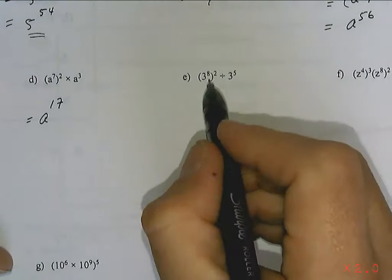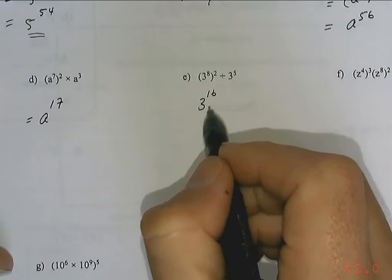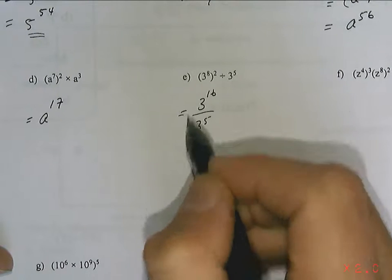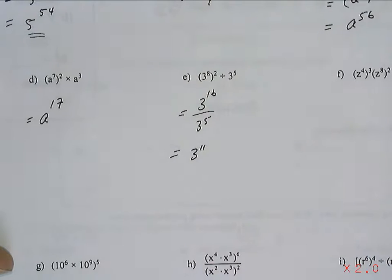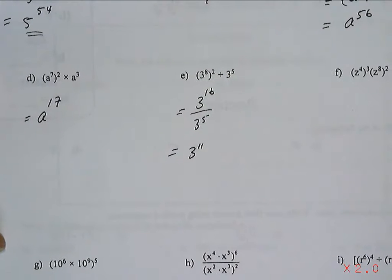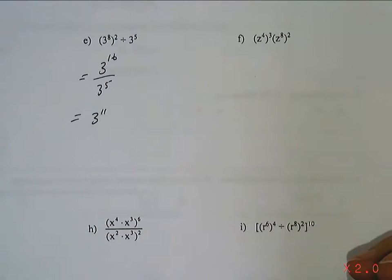Okay. So, the next one. This is going to be 3 to the 16 divided by 3 to the 5. And I'm going to come up with 3 to the 11 as my answer. The next one.